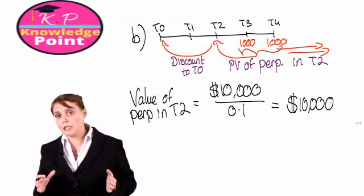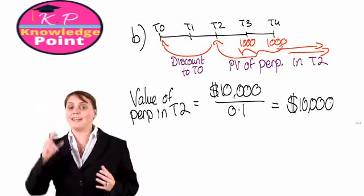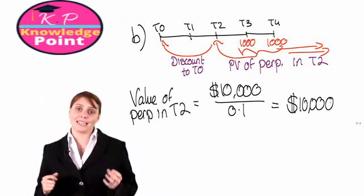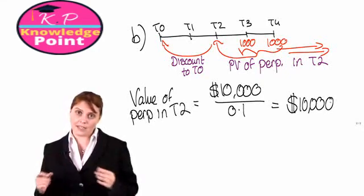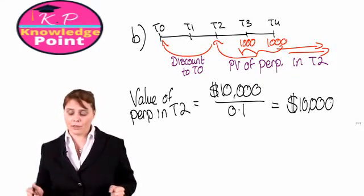So, in two years' time, this perpetuity is going to be worth $10,000. Now, we need to discount back to calculate how much that $10,000 is worth right now.